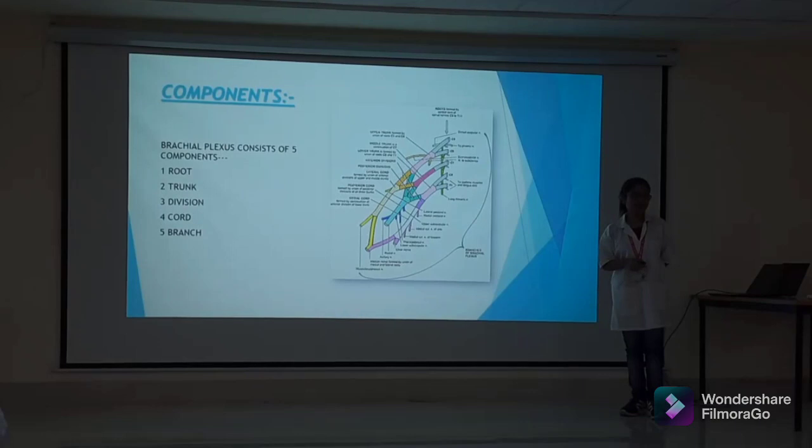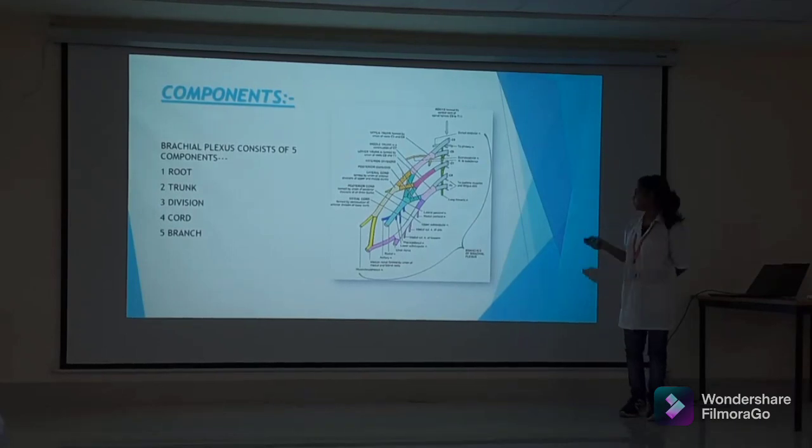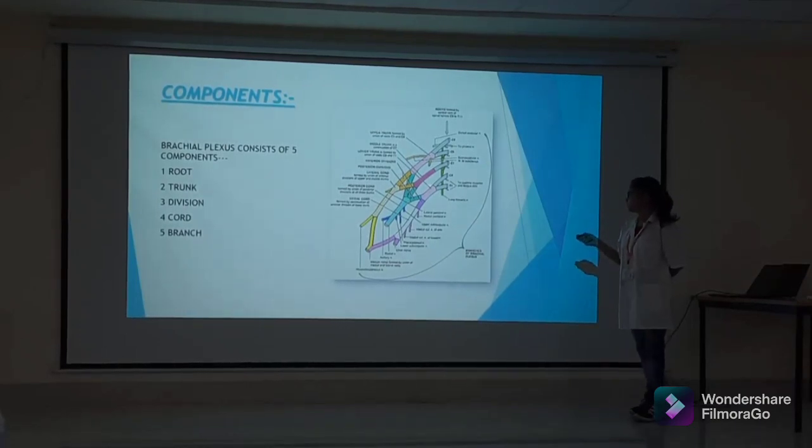The brachial plexus has five components: roots, trunks, divisions, cords, and branches.